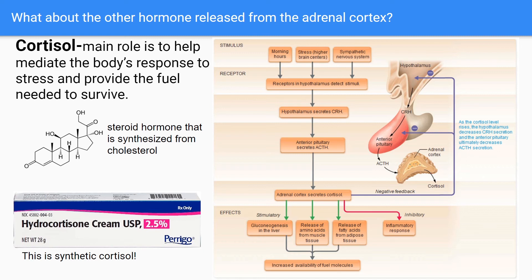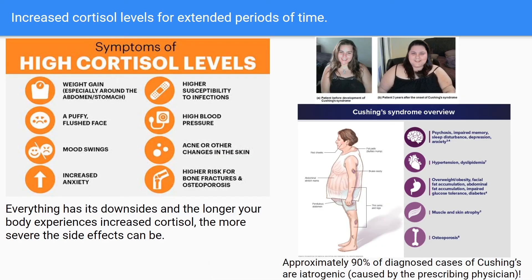Everything we just described is assuming that cortisol levels are regulated and effective. However, we already know that Addison's disease is caused by a shortage of aldosterone and cortisol. Additionally, cortisol levels can be on the opposite end of the spectrum and be really high as well. A condition known as Cushing's syndrome can result from elevated cortisol levels over a prolonged period of time. Remarkably, about 90% of all cases of Cushing's are iatrogenic, meaning they were actually caused by a medication prescribed by a doctor. Sometimes, both the doctor and the patient must weigh the pros and cons of continued steroid use, even performing cycles on and off the steroid to try to mitigate the effects of high cortisol levels while still managing the destructive nature of the autoimmune disease.